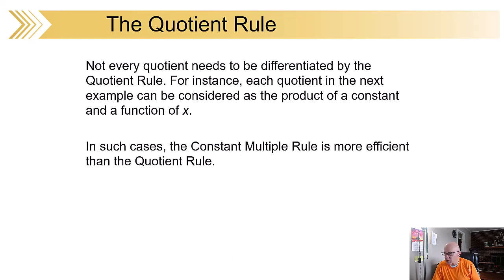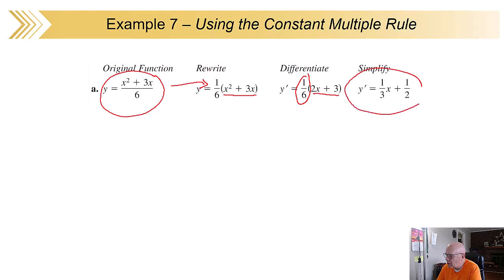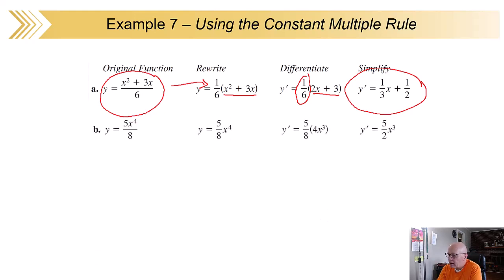Not all quotients need to be differentiated using the quotient rule — good news. Sometimes it can be more efficient to use the constant multiple rule. Here's one example: you can rewrite the first one as one-sixth times the function, then use that one-sixth as the constant, take the derivative of the rest, and multiply. Next, 5x to the fourth over 8 — separate that as five-eighths times x to the fourth, take the derivative of x to the fourth, and you've got it without using the quotient rule.